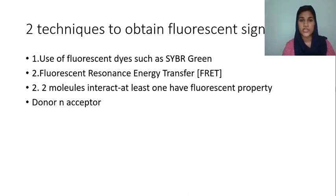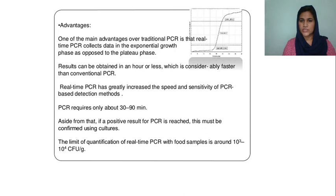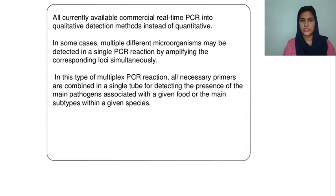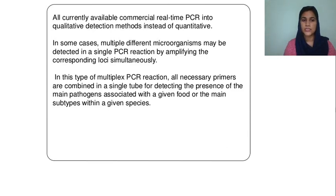You can use Polymerase Chain Reaction through these three processes. One advantage is that Real-Time PCR takes approximately 30 to 90 minutes. The detection limit for Real-Time PCR is 3 to 4 CFU per gram. Specific primers are needed to detect the target pathogens, and you need to test which pathogens are associated with the sample.